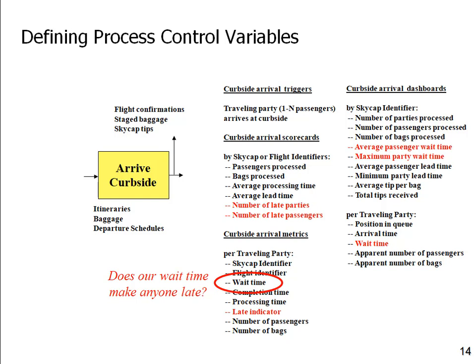These are all things you get out of defining your process control variables. The process map you've drawn — with all its steps, inputs, and outputs — is only the beginning of engineering the process. Our job as system engineers is to make sure we capture the triggers, metrics, dashboards, and scorecards that will ultimately control that process. If you're writing a requirements document, somewhere around your process maps you should be talking about these control variables. Don't worry about whether they'll be implemented in a particular automated tool or design strategy — this is a requirements phase tool. Your job is to figure out the variables that could and might be used to control the process; you'll decide later in design how and when to actually implement them.